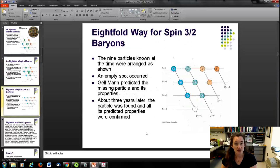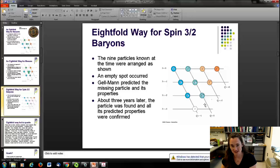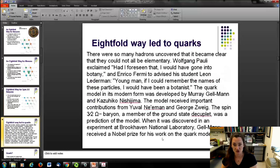If you do the same kind of plot for the spin three-half baryons, now you have to add this extra line for the strangeness. You have strangeness minus two and strangeness minus three. The nine particles that they knew of at the time were arranged that way. And then they noticed that there was an empty spot. And Gell-Mann predicted the missing particle and its properties. And about three years later, they found the particle and the predicted properties were confirmed. And that was a big success for Gell-Mann's Eightfold Way. And this Eightfold Way led to quarks.